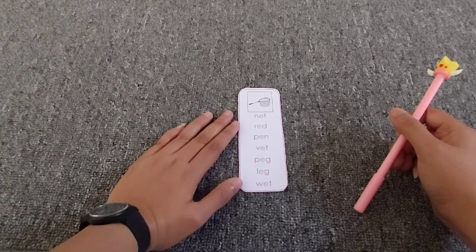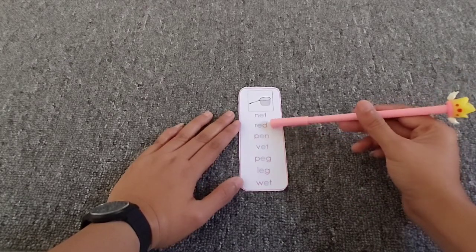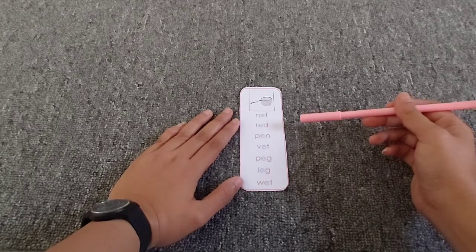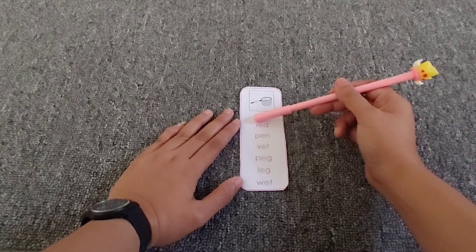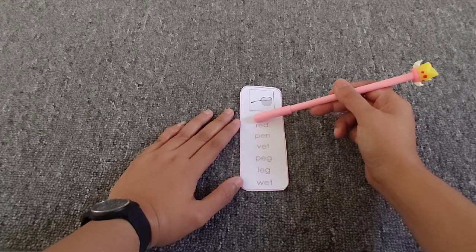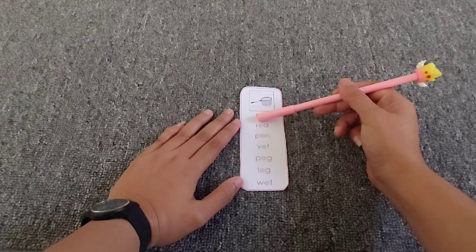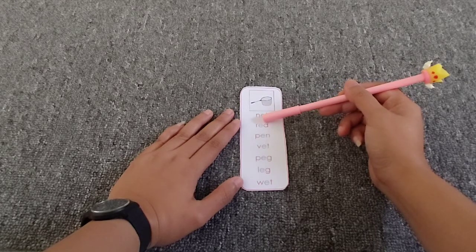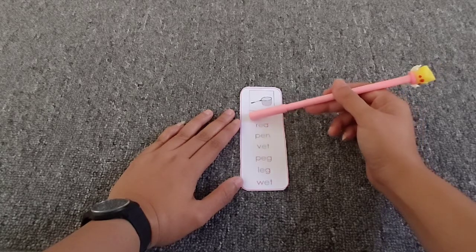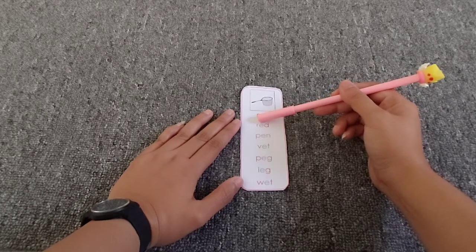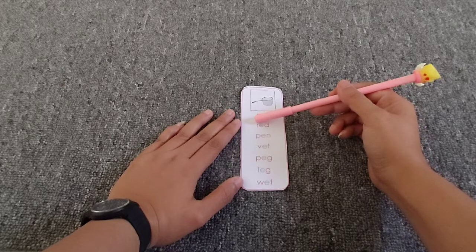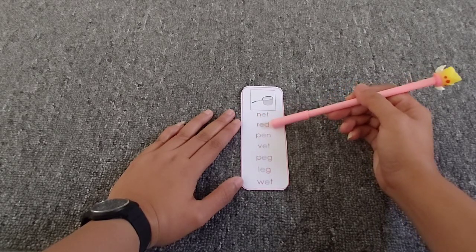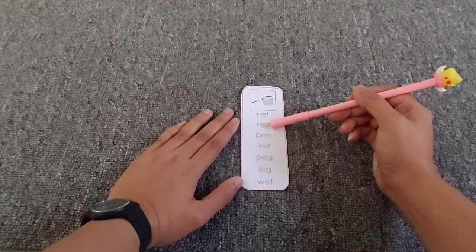Now let's try to read this one. Start with spelling it one by one. This is R. R. This is E. E. This is D. D. R. E. D. R. E. D. So, how do we read this letters?